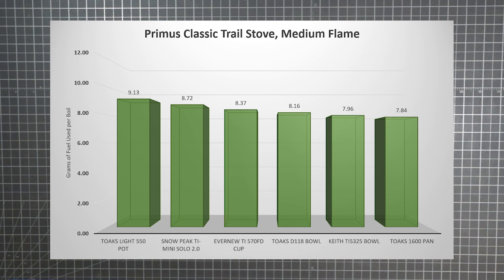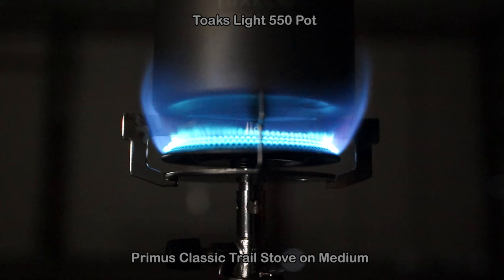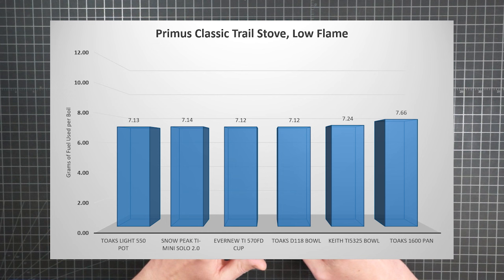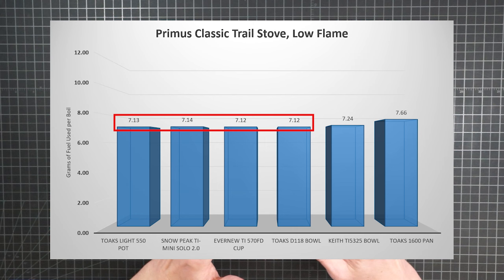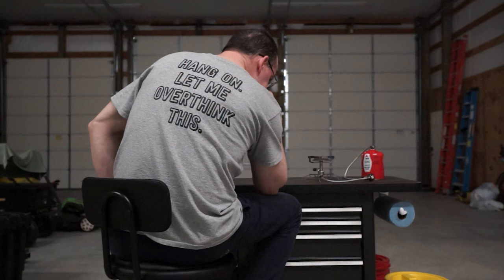The Primus was also least efficient for all vessel types with a medium flame. In fact, for all but one container, the BRS was more efficient on high than the Primus was here on medium. There's still a lot of heat spilling past the pot edges. With the Primus on low, it starts out looking similar to the previous stoves. The trend is flat as a pancake, showing no difference from one vessel to another. But then, right at the end, there's this rise. It's subtle but distinct and larger than the margin of error. As the vessels get wider, they start getting less efficient, not more.